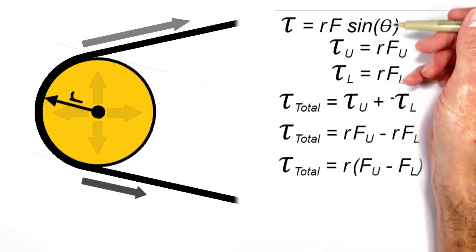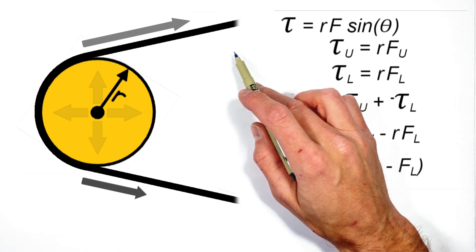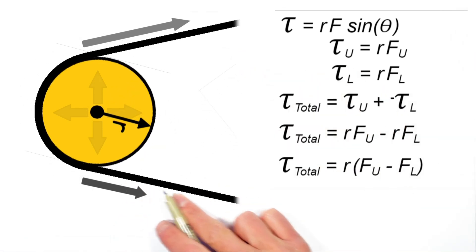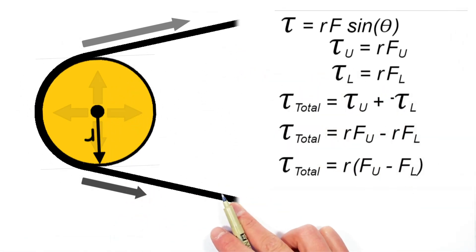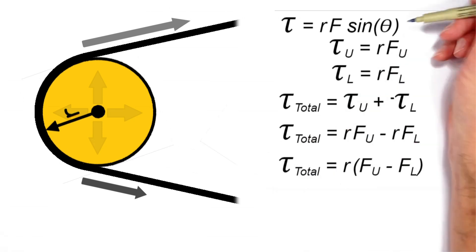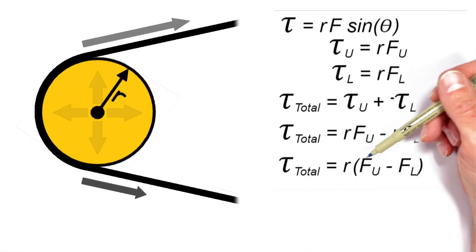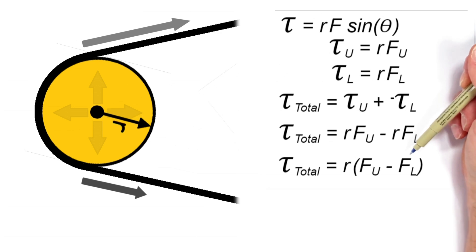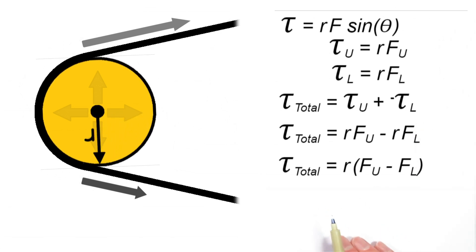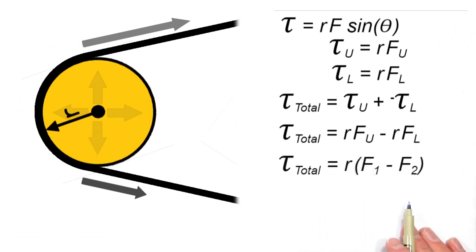Now the way we structured this solution, we said that the force in the upper portion of the belt was greater than the force in the lower portion of the belt. But that's not always going to be true. So to make this equation apply a little bit better to any situation, rather than saying this is the force in the upper and lower strands of the belt, let's just call them force one and force two.